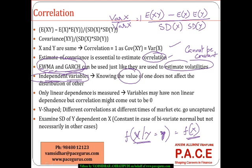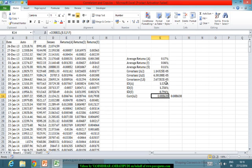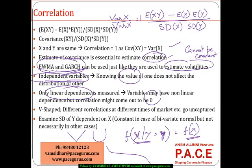Correlation computed using covariance divided by standard deviations is a measure of linear dependence only. In some cases we may have non-linear dependency — variables with a V-shape, a parabola shape, or other extreme shapes. When I try to compute correlation using the standard formula or Excel's correlation function, I end up with correlation equal to zero, even though in reality there is a very strong relationship. Correlation, as determined by this formula, only brings out the linear relationship — any non-linear structure is simply ignored.